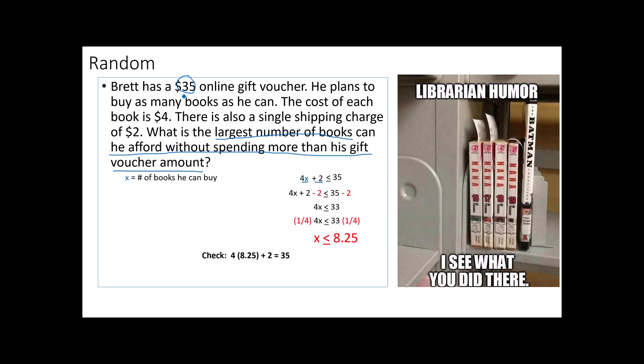If I plug that 8.25 back into my equation, you'll notice that it does, in fact, equal 35. The question here is, how many books can he buy? What's the largest number of books he can buy? 8 books is the most he can buy. Notice that even though 8.25 would equal the $35, in that sense it's acceptable, but is it pragmatic or realistic to think that you can buy 0.25 of a book from an online website? Probably not. The 8 makes more sense. Certainly he can't afford to buy 9.